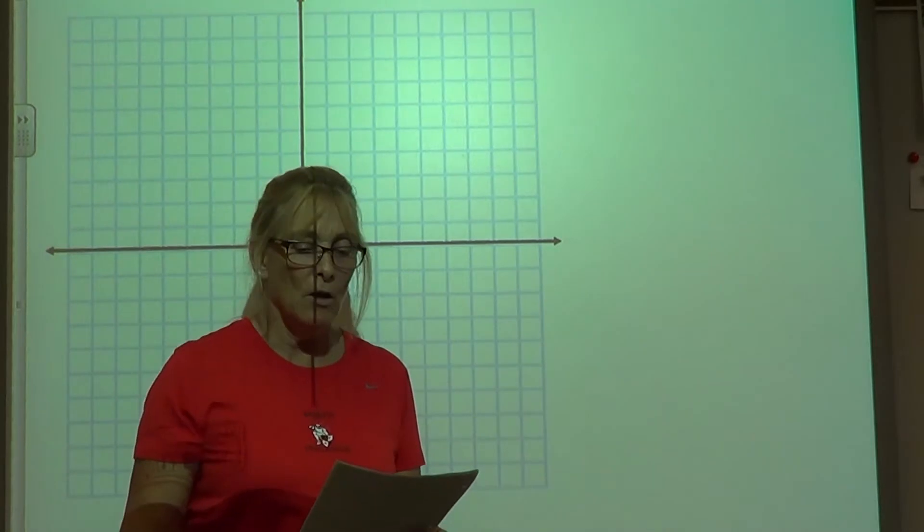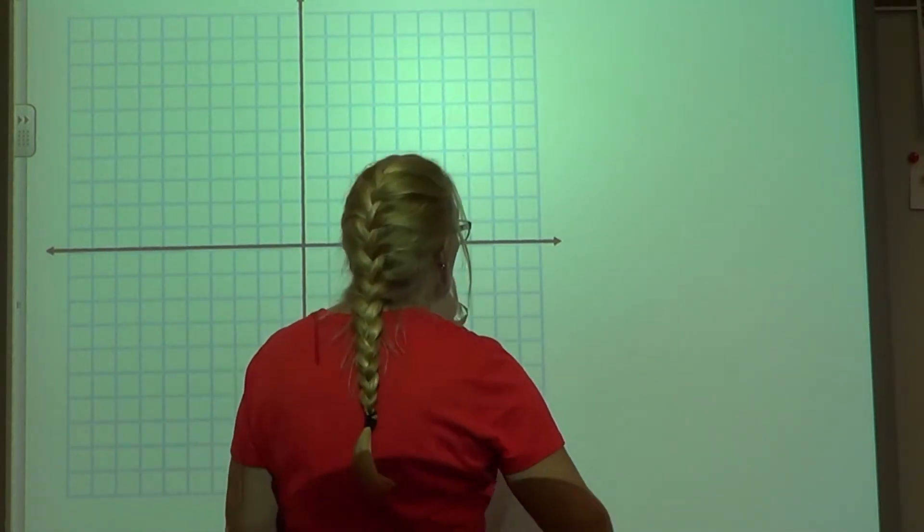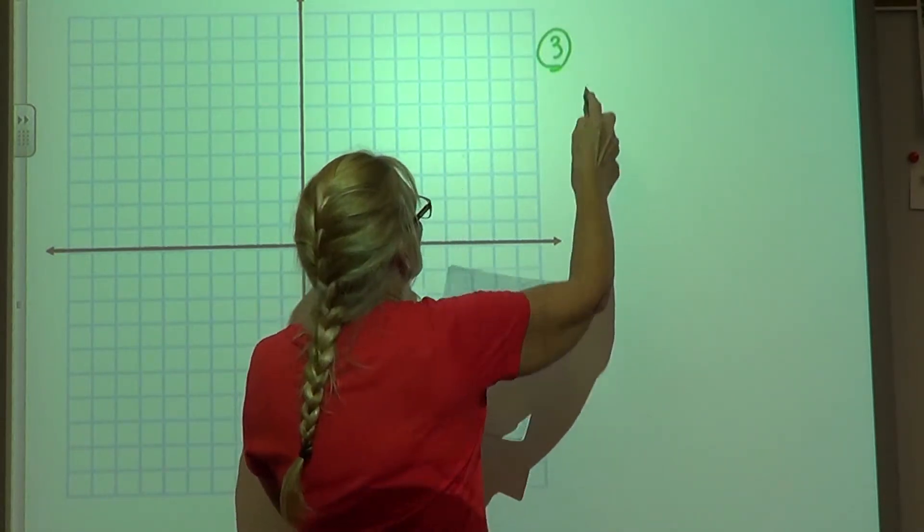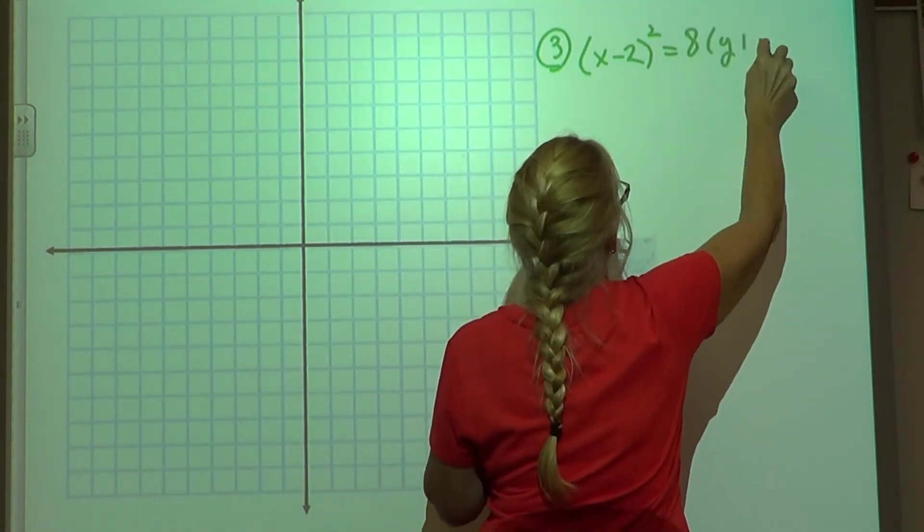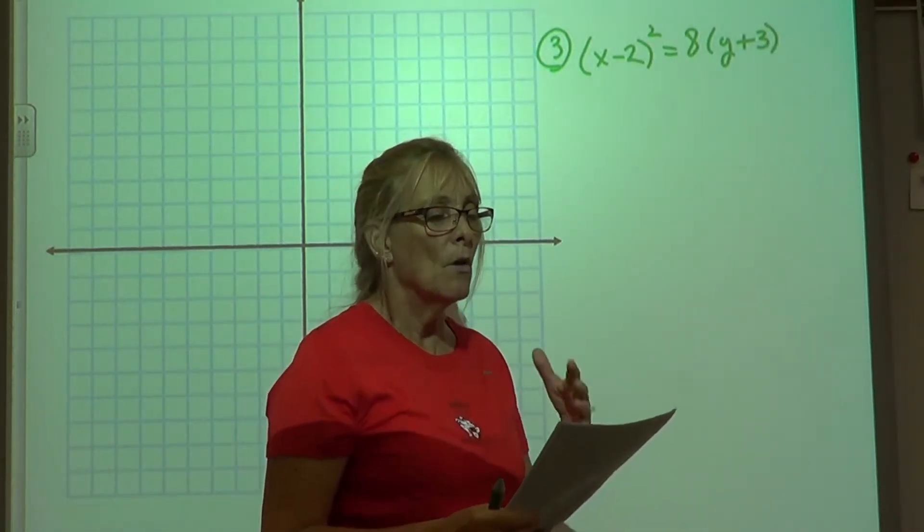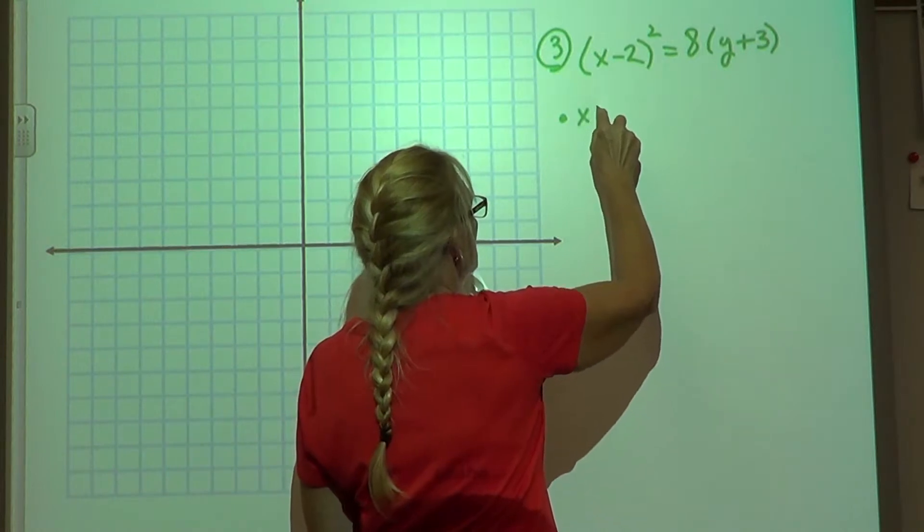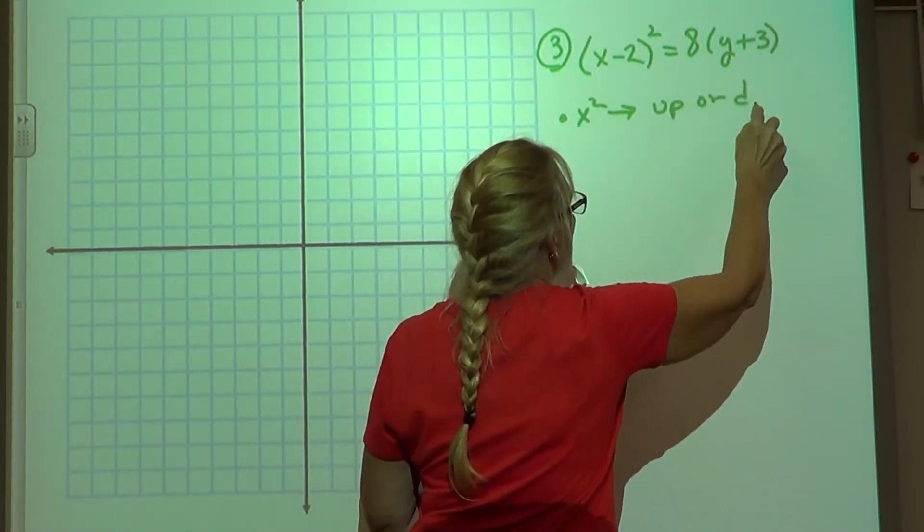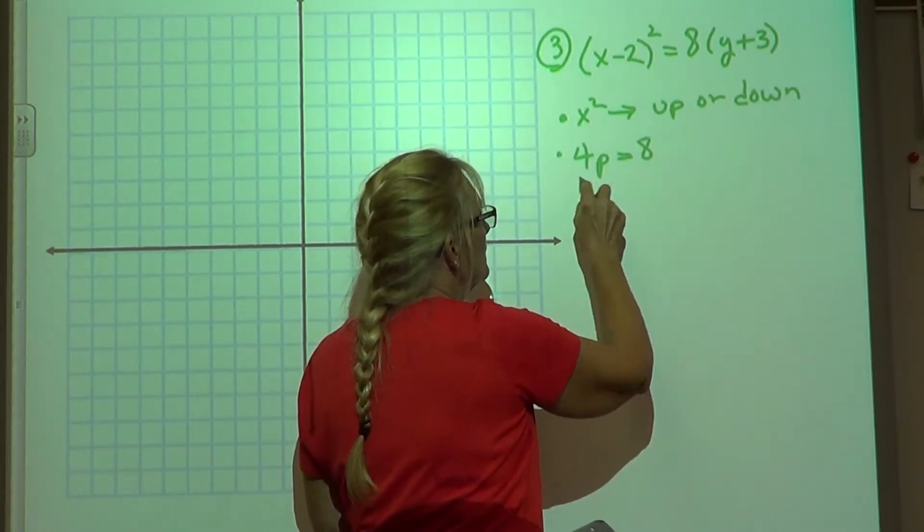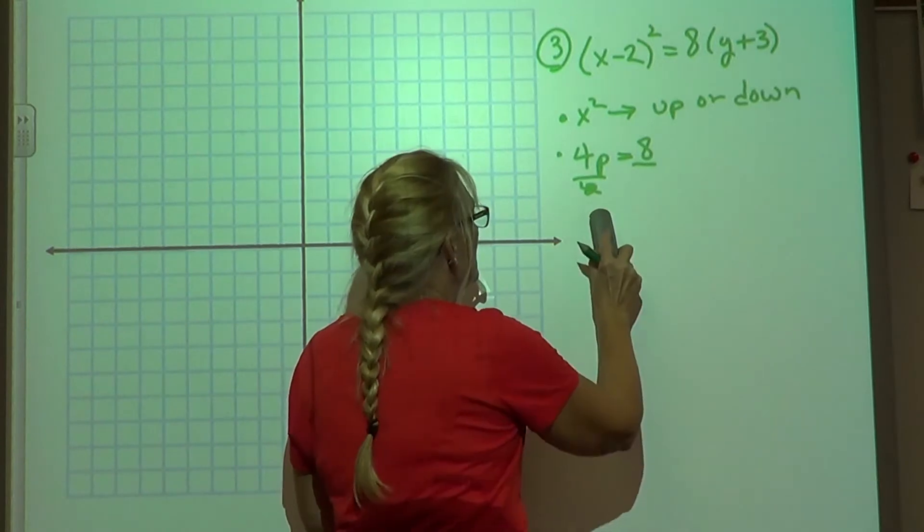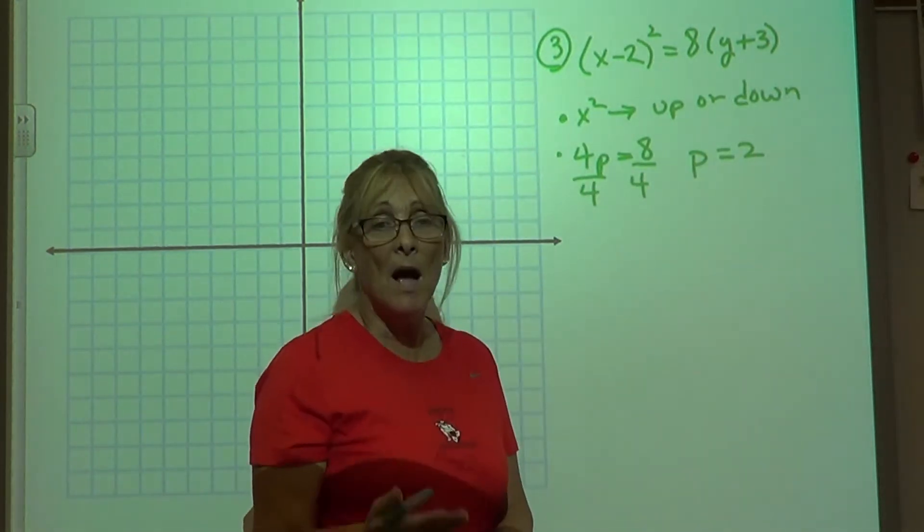The third one on the half sheet, the only difference here is we now have a defined vertex other than the origin of zero, zero. So the equation is x minus 2 squared equals 8 times y plus 3. Lots of information to draw from this one. First of all, which way it opens. Since x is squared, it either opens up or down. Okay? Since 4p equals 8, p will equal 2. Since p is positive, it's going to open up.